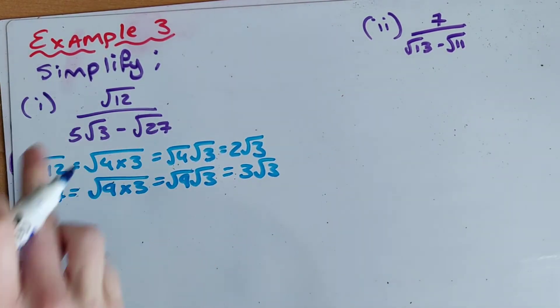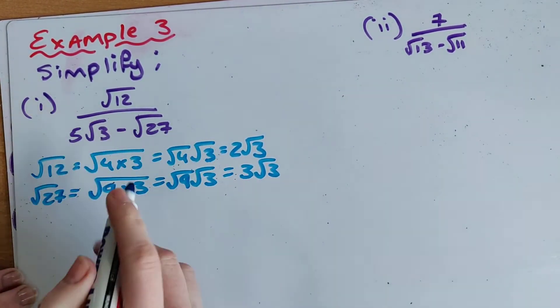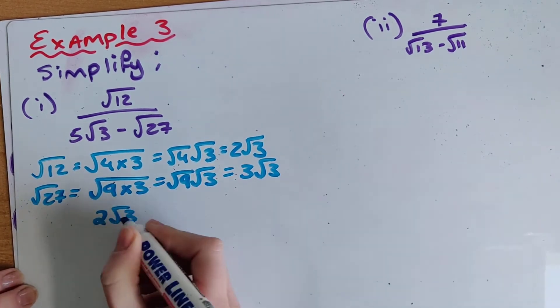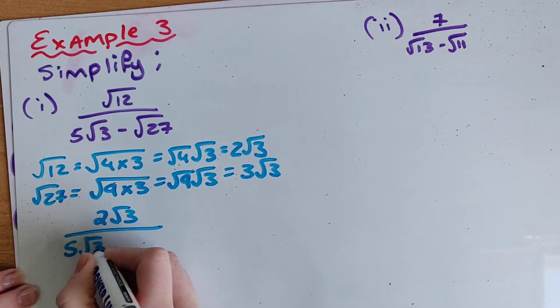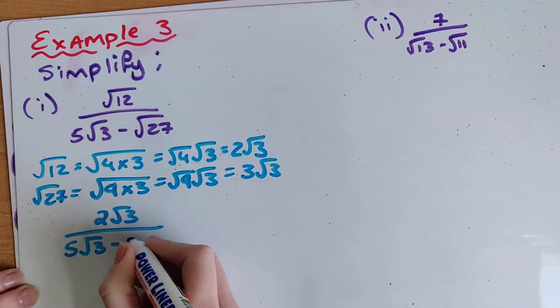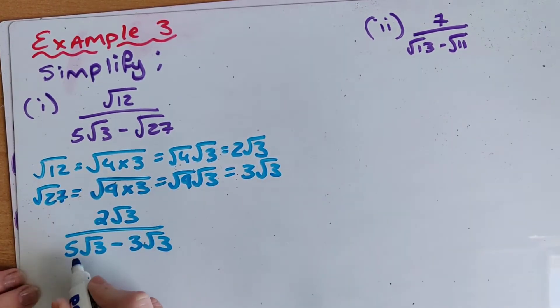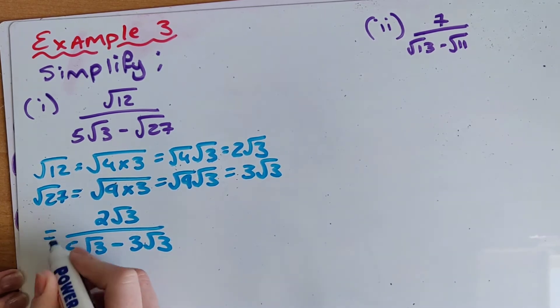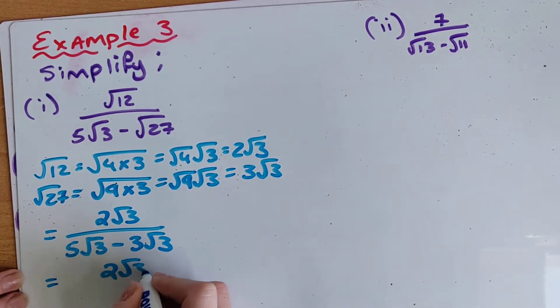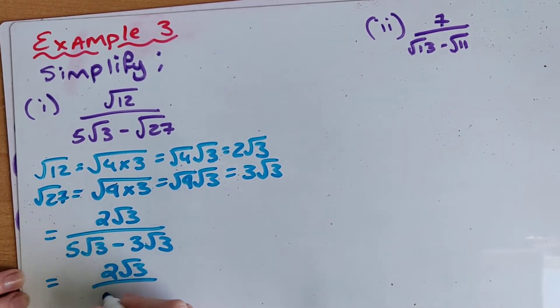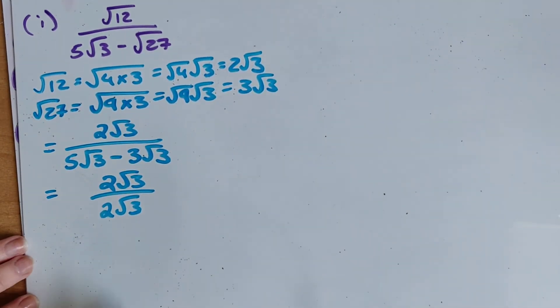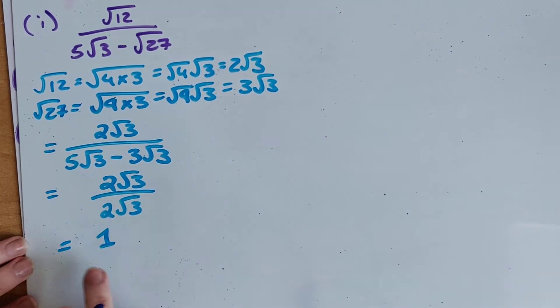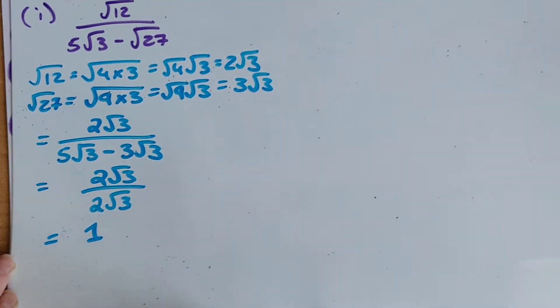So now I'm going to take these two surds and sub them back in. So root 12 is really 2 root 3 all over 5 root 3 is still the same minus root 27 is really 3 root 3. So now I can see I can subtract them on the bottom to give me 2 root 3 over 5 take away 3 is also 2 root 3. And then 2 divided by 2 is 1 root 3 divided by root 3 is 1. So my overall answer is just 1.